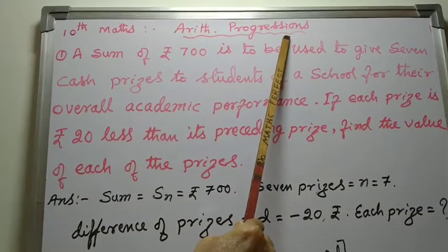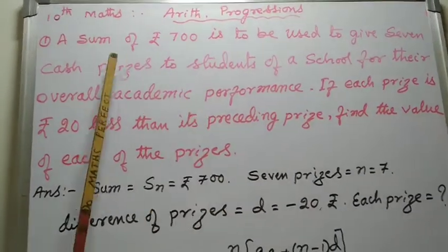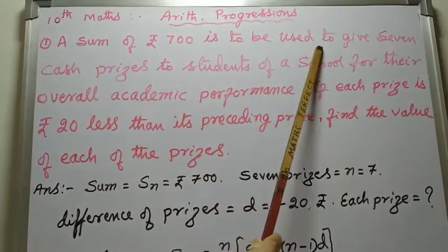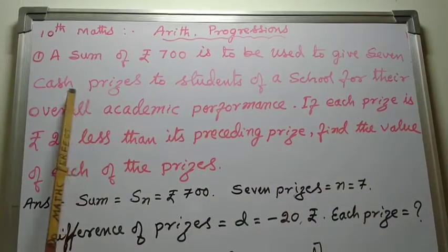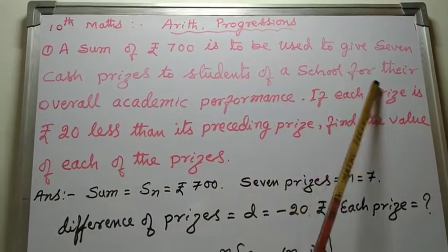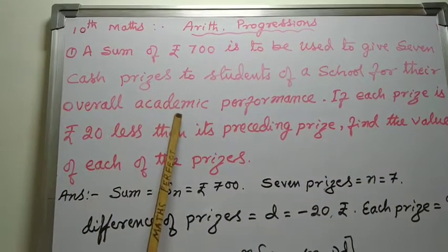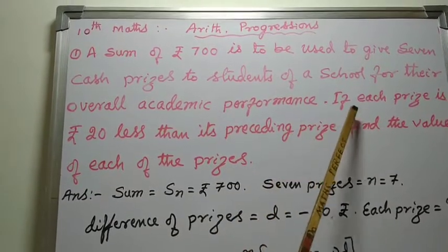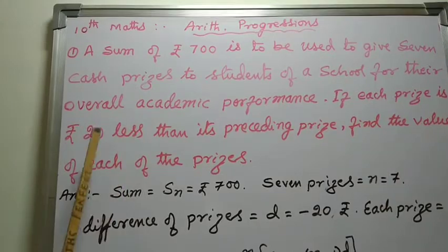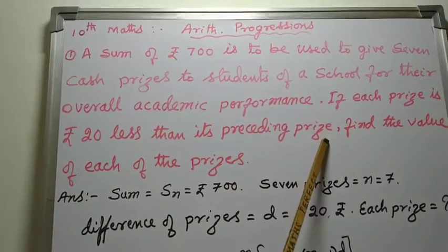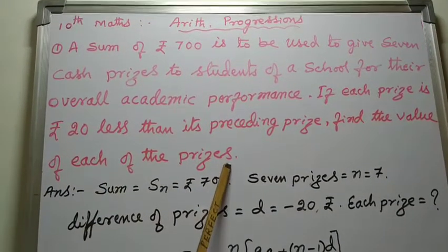Arithmetic Progression: A sum of Rs. 700 is to be used to give 7 cash prizes to students of a school for their overall academic performance. If each prize is Rs. 20 less than its preceding prize, find the value of each of the prizes.